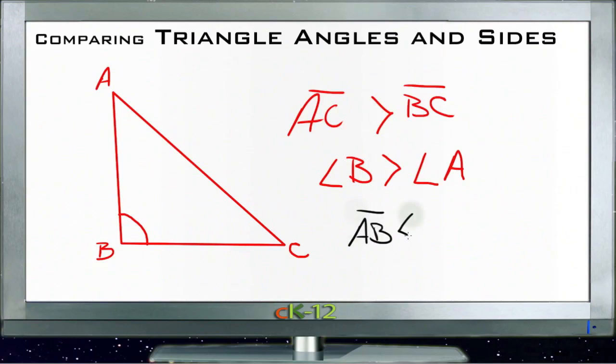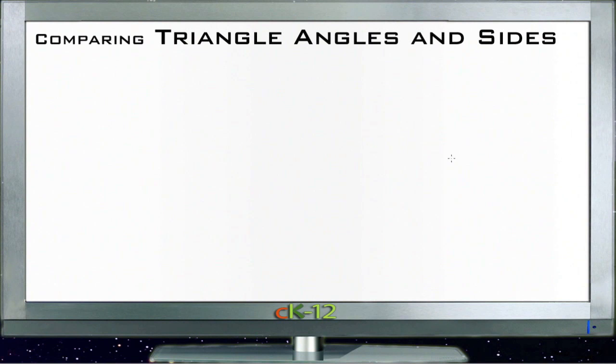Larger angles go with larger sides and smaller angles go with smaller sides, which makes logical sense. Now let's extend that to compare two different triangles.